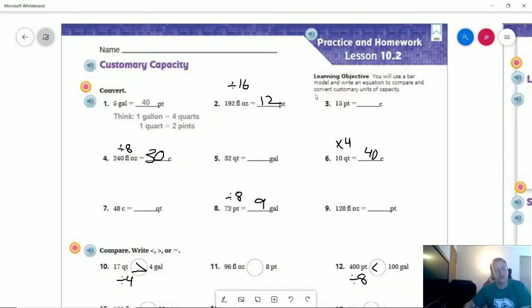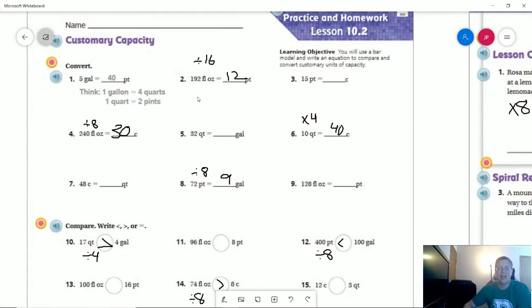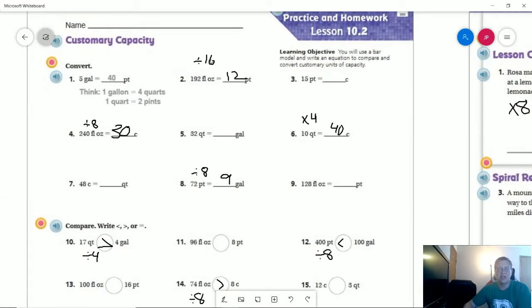To start with, I wrote all of the operations that we are going to work with. To get from ounces to pints, we would be dividing by 16 because there are 8 ounces in a cup and 2 cups in a pint. So if I do 192 divided by 16, that's going to give me 12. For 8 ounces in a cup, I would divide by 8. That's going to give me 30 cups out of 240 ounces.